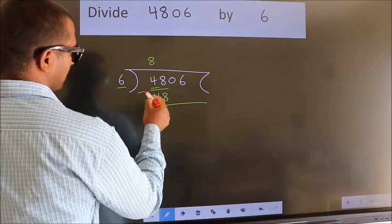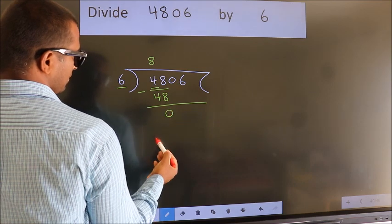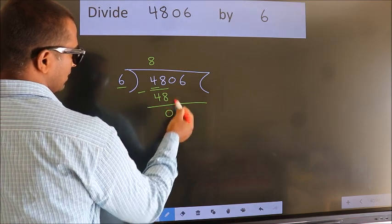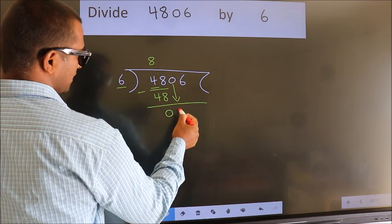Now we should subtract. We get 0. After this, bring down the beside number. So, 0 down.